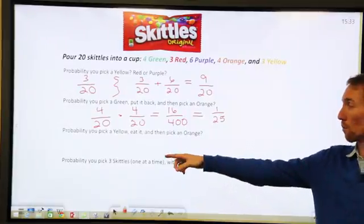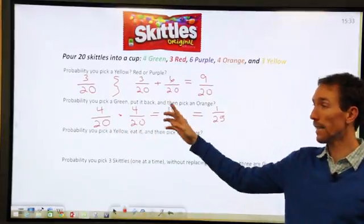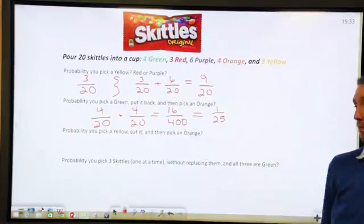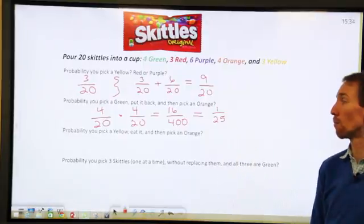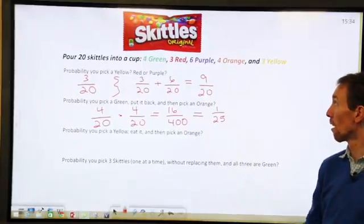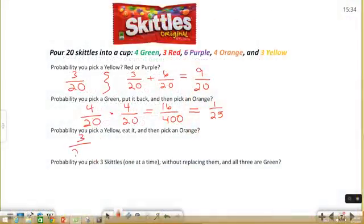All right, so the next one. Find the probability that you pick a yellow Skittle, you're going to eat it, and then you're going to pick an orange one. So we're doing one thing and then another. So we're going to multiply probabilities again. Well, like I said earlier, there's 3 yellows out of 20.